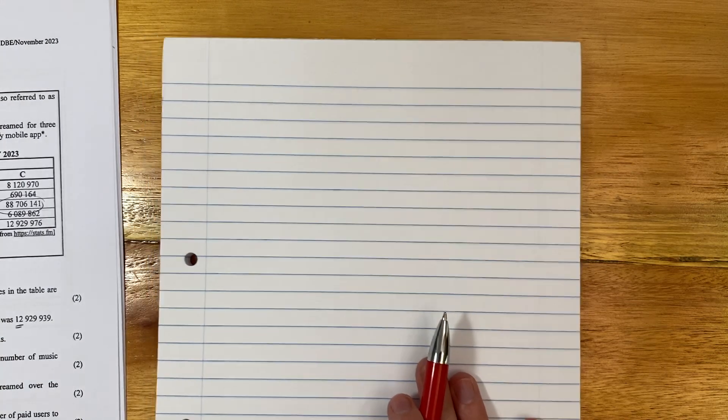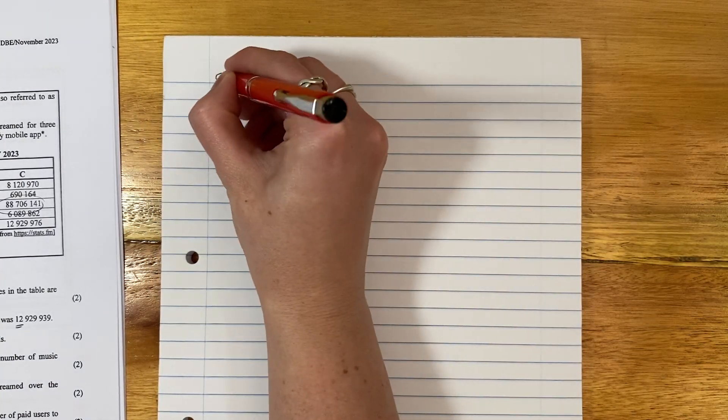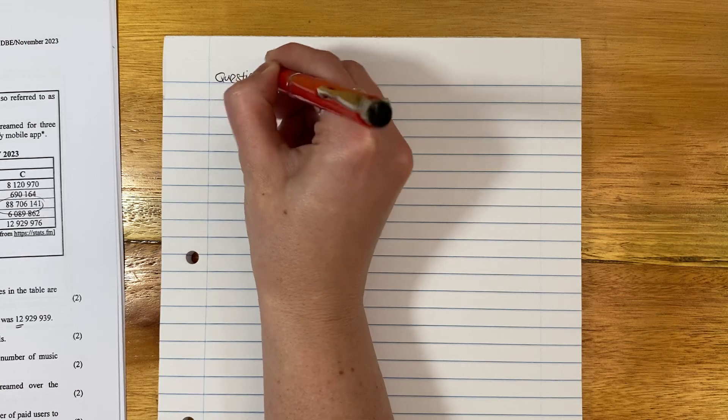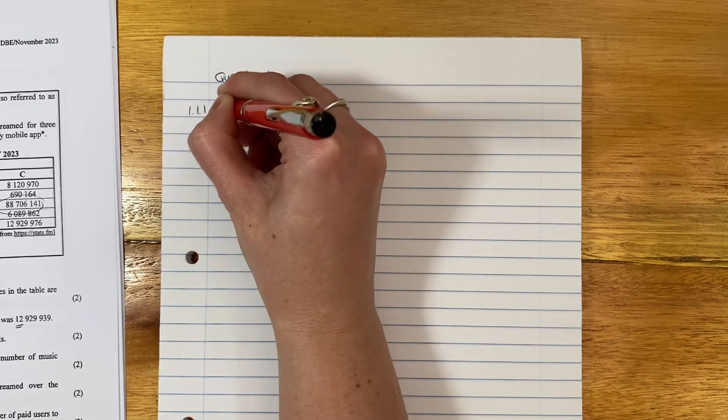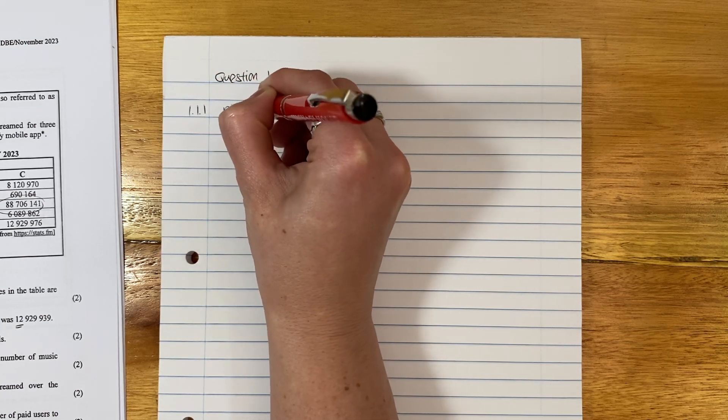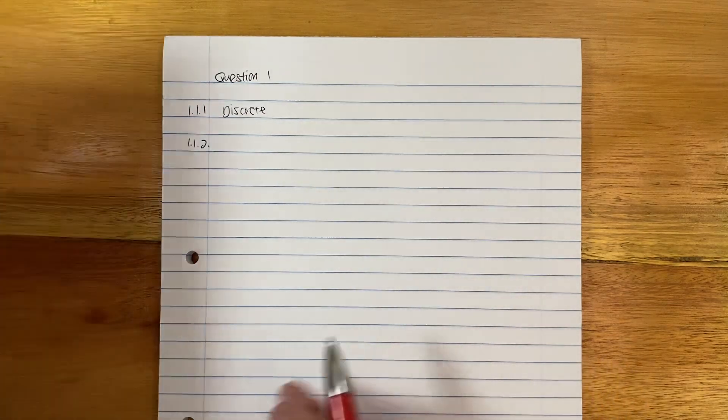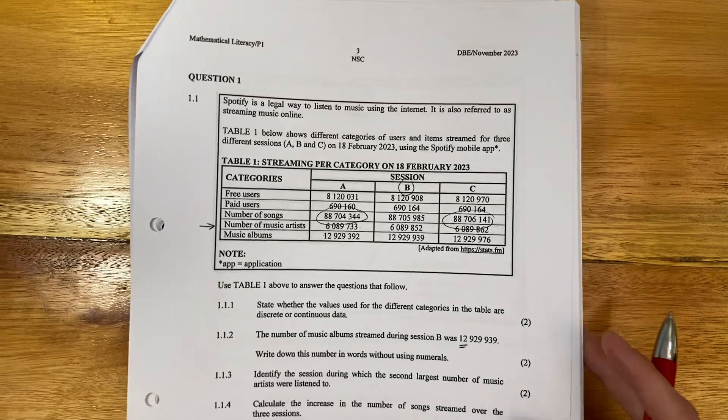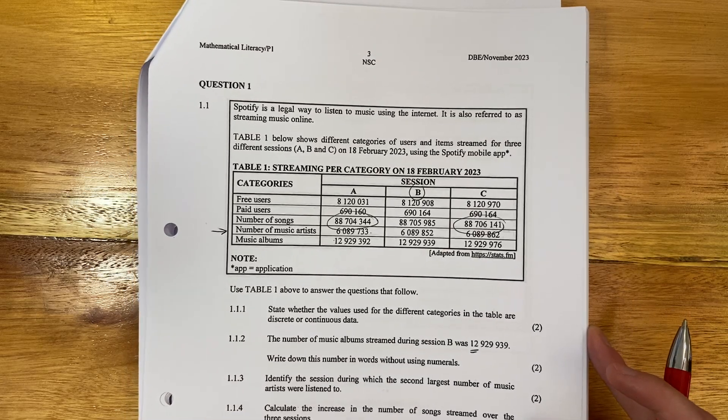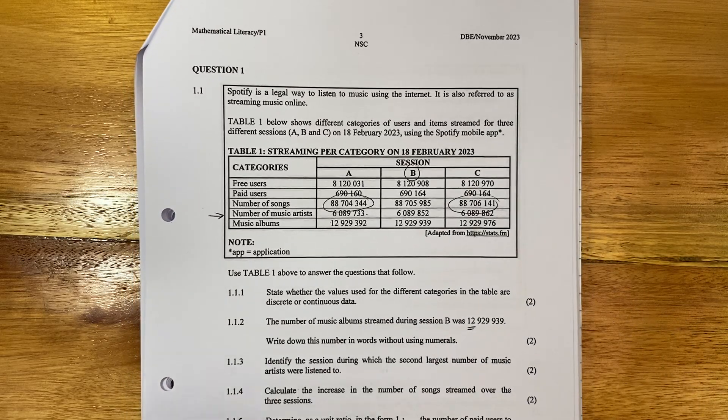Remember, we're starting each question on a new page. So here's question one. So you say question one, 1.1.1 and you just say discrete. Sometimes what students do here, and I'll warn you against this, is they try to explain why it's discrete. The question doesn't ask that. It just says, is it discrete or continuous? State and move on.